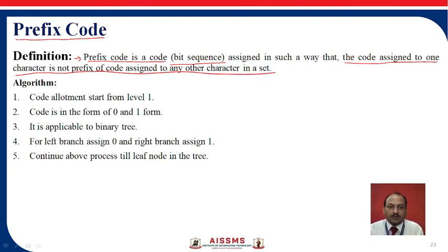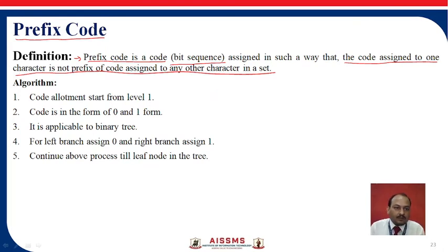This is most important. Whatever code we are going to assign, we have to assign it in such a way that the code assigned to one character should not be assigned to any other character in the set. There is a simple algorithm to follow, and you will be able to assign a code to the binary tree.